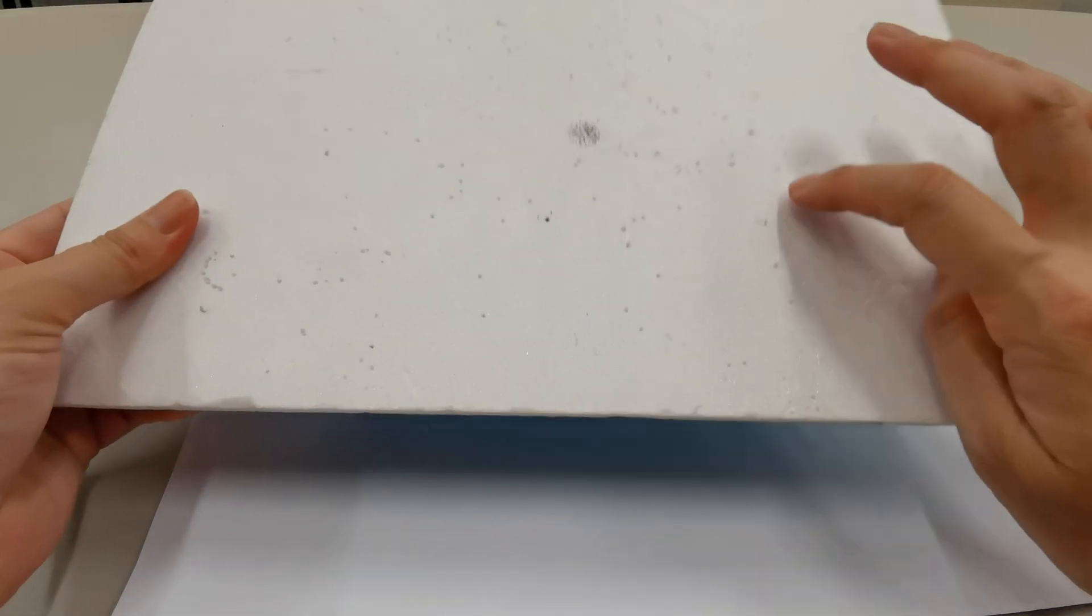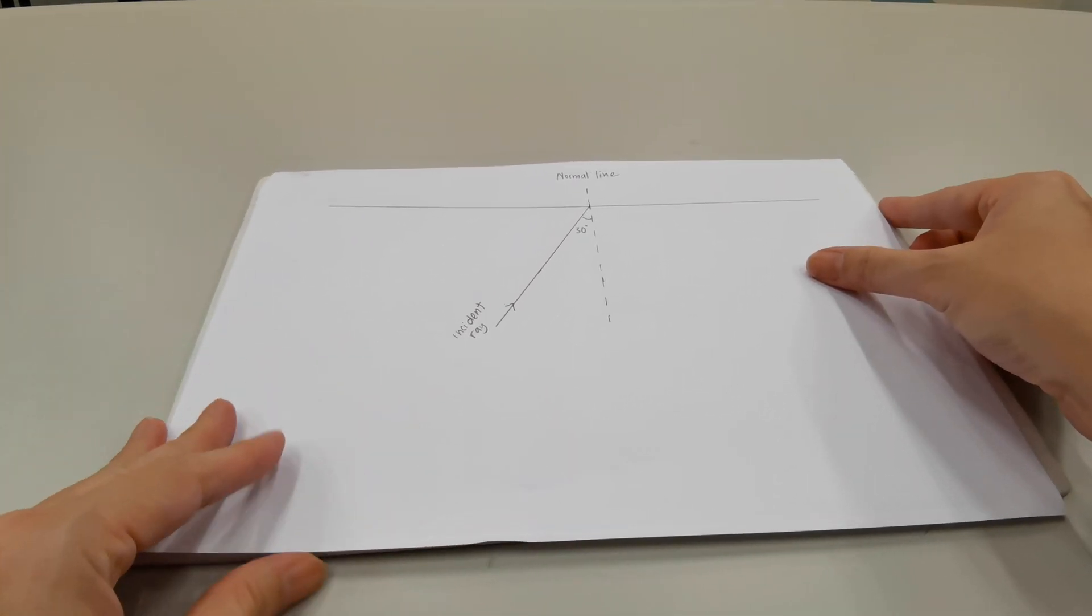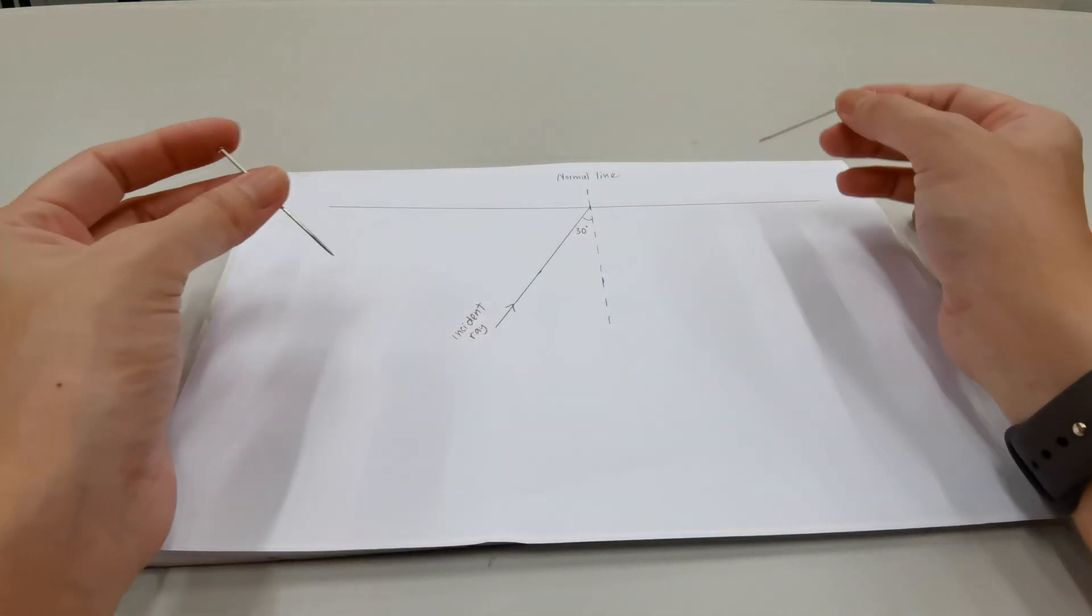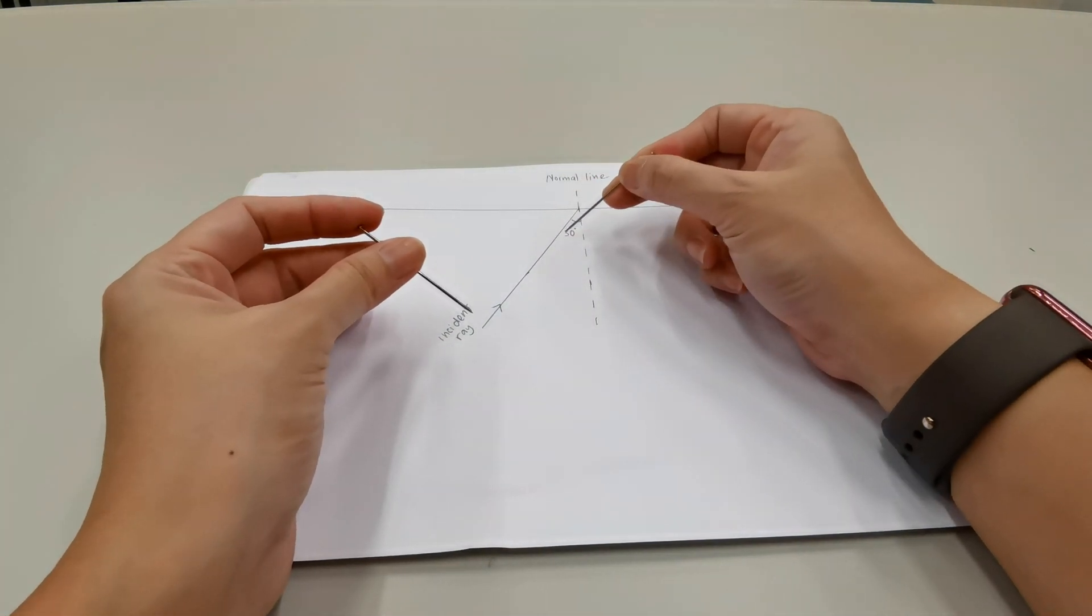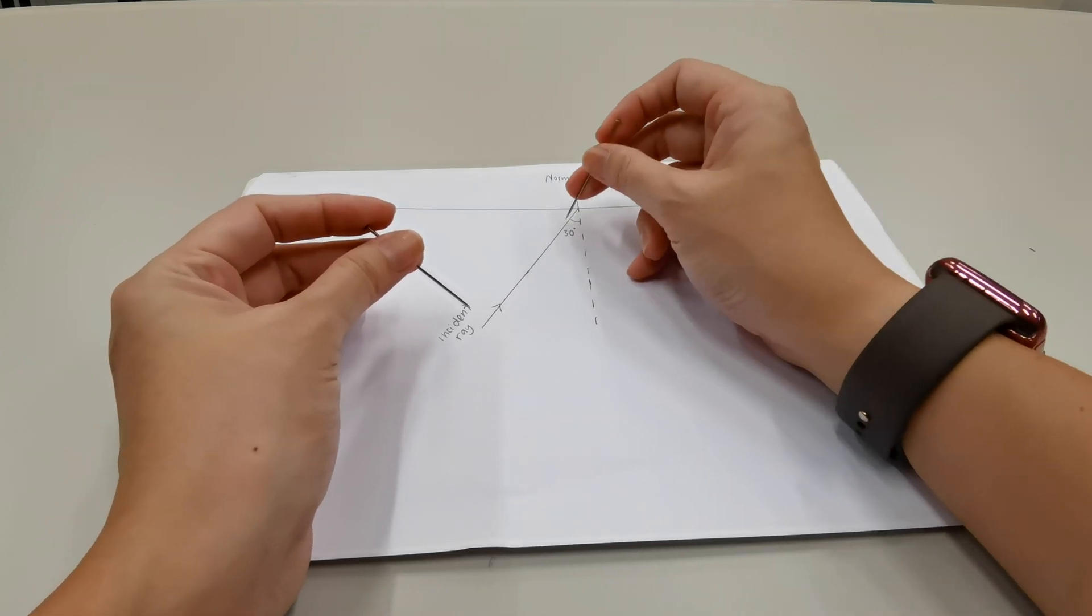Next, with the foam board, we're going to place the foam board underneath the paper. We'll take two pins, and we'll place the pins on the incident ray. And the further away the pins are, the better. Try to put them at least five centimeters apart.